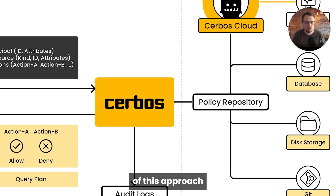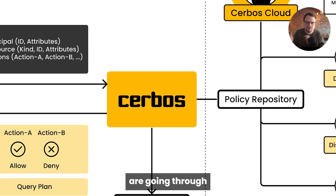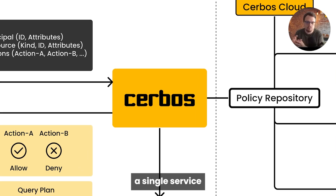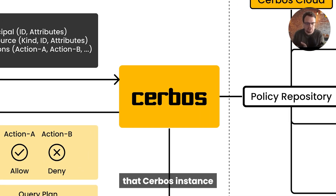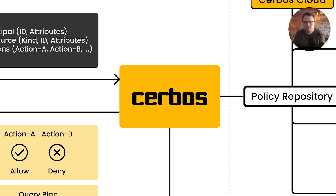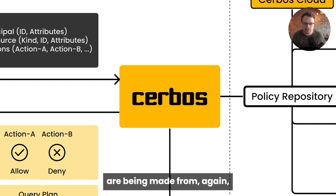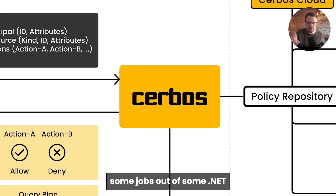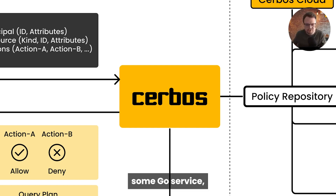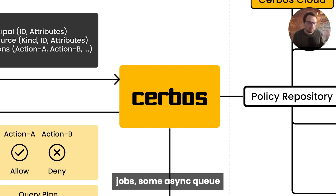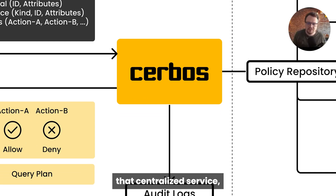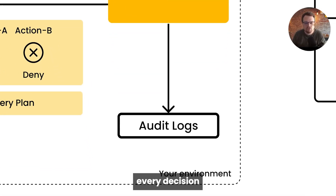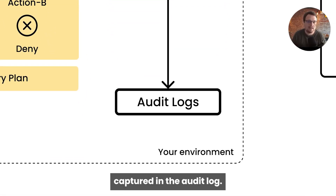The second big benefit of this approach is now because all the requests are going through a single service inside of your system — that Cerbos instance or instances — regardless of where the checks are being made from: front-end, back-end, some Node service, some Java service, some .NET service, some Go service, some batch jobs, some async queue processor, etc. Because all those checks are going through that centralized service, every decision is going to be captured in an audit log.